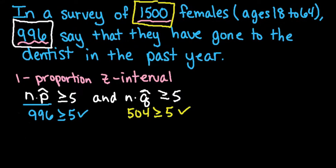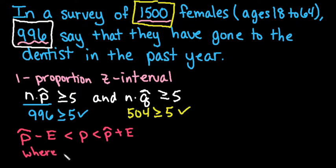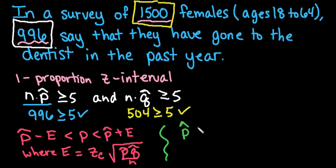The formula for the one-proportion z-interval—there are two that I know based on the textbook that I use. One uses p-hat minus e and p-hat plus e, where e equals z-c, which is the critical value, times the square root of p-hat q-hat divided by n. Or another textbook uses p-hat plus or minus z-star, which is just another way of notating z-c, the z-score that corresponds to the level of confidence that we're using, times the square root of p-hat q-hat divided by n.